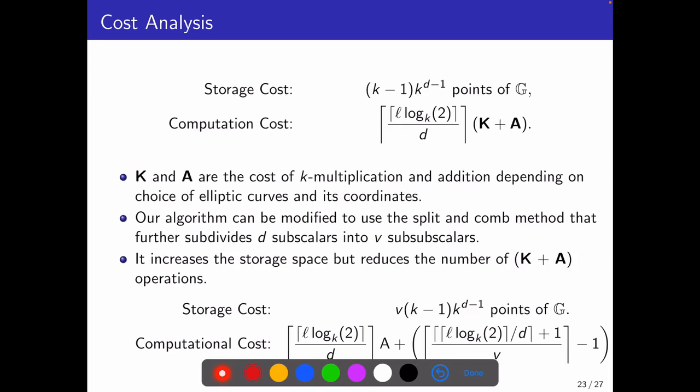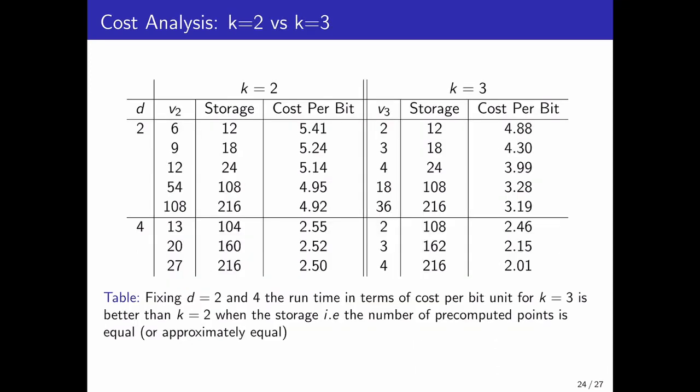Our algorithm can also be modified to use split and com method. In that case, each of the subscalars is further subdivided into V subscalars. This increases the storage cost while making the algorithm faster by reducing the number of addition and k multiplication operations. In that case we modify our storage and computation costs as it is shown here. Now looking at the cost per bit unit and the storage for a fixed D for k equals 2 and 3, we find some winning cases for k equals 3. This says that in some scenarios where number of subscalars D is fixed, our algorithm can be useful since it works for any base.